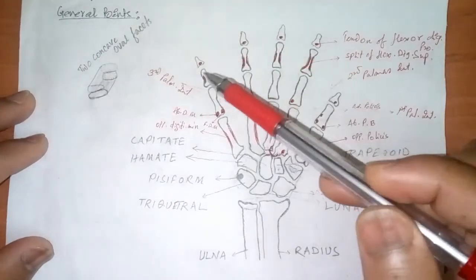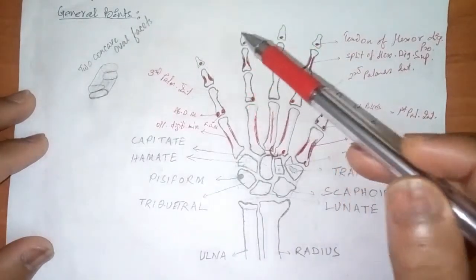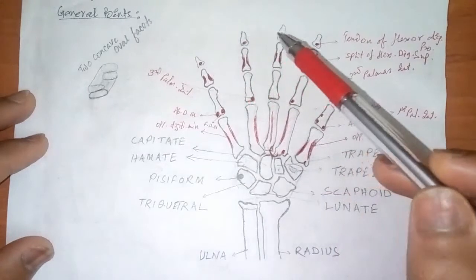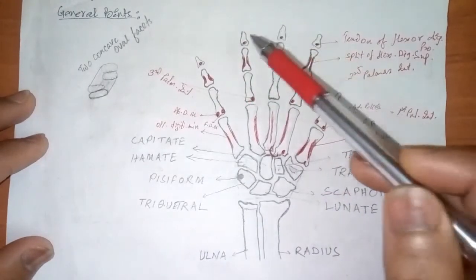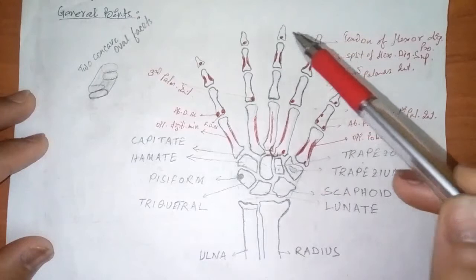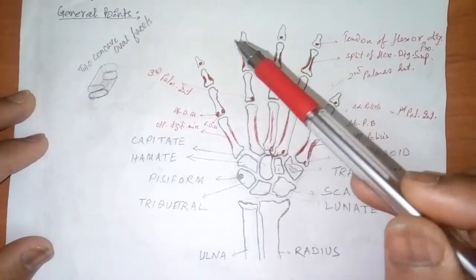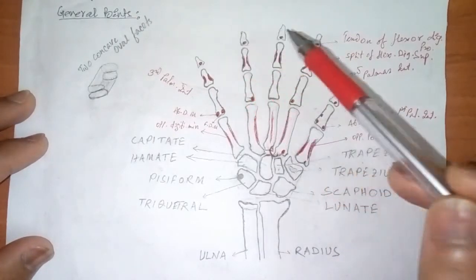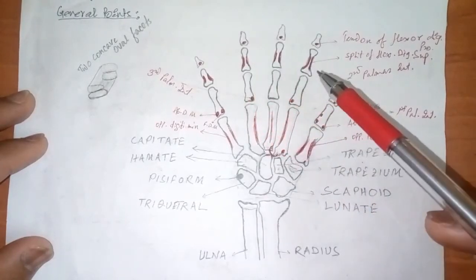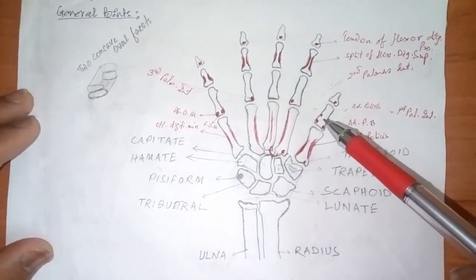So in total we have only 4 middle phalanges, because the thumb misses the middle phalange. And lastly, the most distal part of the bones of the hand — these 5 bones are called the distal phalanges. So we have 5 distal phalanges, 4 middle phalanges, and 5 proximal phalanges.